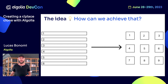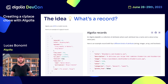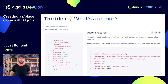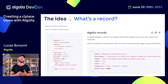Maybe you don't know what a record is. In Algolia's context, a record refers to a small JSON object that contains attributes and values. These values can be strings, arrays of strings, numbers, booleans — it can be everything you can give to a JavaScript object. That's a record.